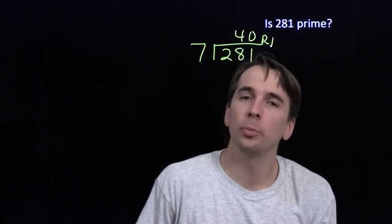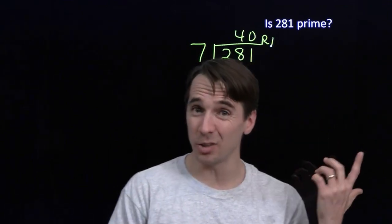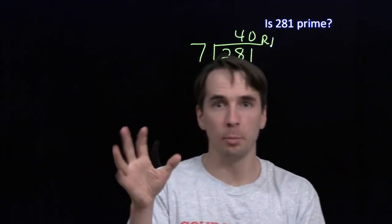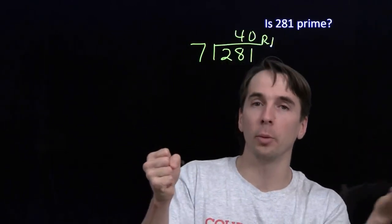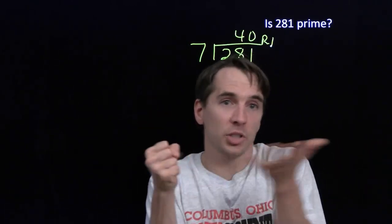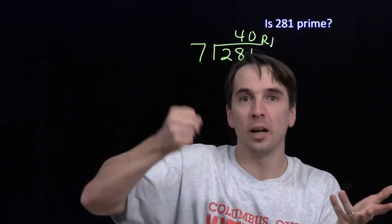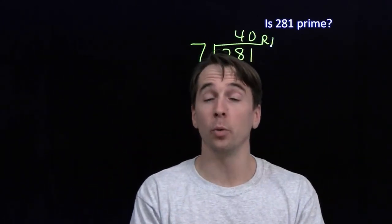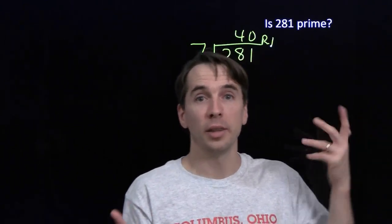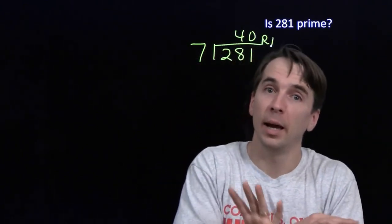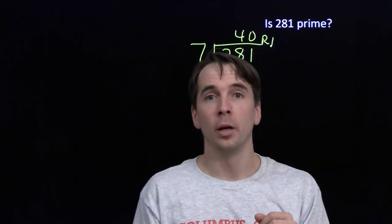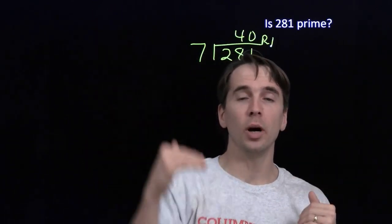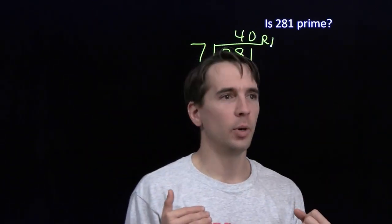All we have to test are the primes. Because once we test a prime and see that it doesn't work, we know that no multiples of that prime will work. Any composite number is a multiple of some smaller prime, so we'll never have to test composite numbers — we'll have already tested those primes. If we find a prime that goes into 281, we can stop; that's a divisor and 281 isn't prime. But if we don't find any primes that go into 281, then 281 is prime.